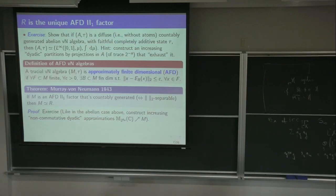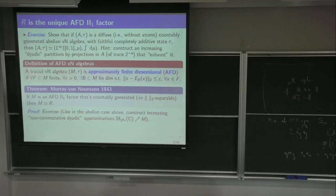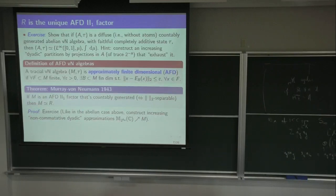Remember it's in norm-2, which is like approximation in measure, so that's why you can change the measure of the step functions to be dyadic — k/2^n — and it's very easy to pass from arbitrary finite-dimensional to this type of finite-dimensional approximation and to make it increasing. That's what you have to do to get your model for R — you remember how we constructed R as 2^n by 2^n matrices.